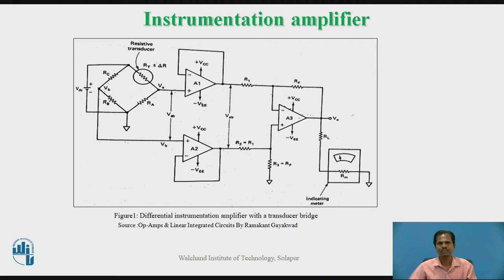This figure shows an instrumentation system in which a differential amplifier is used as an instrumentation amplifier — a differential instrumentation amplifier with transducer bridge. An electrical bridge is used in which a transducer is connected. The output of the electrical bridge, voltage VAB, is applied to two operational amplifiers A1 and A2. Operational amplifiers A1 and A2 act as voltage followers. Their output is applied as differential input voltage for the basic differential amplifier using op-amp A3. The output of this differential amplifier, acting as the instrumentation amplifier, can be connected to a meter which measures the corresponding physical quantity.